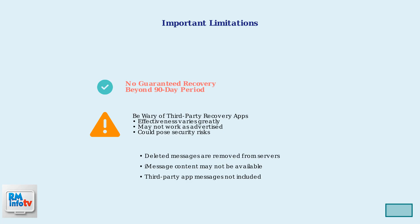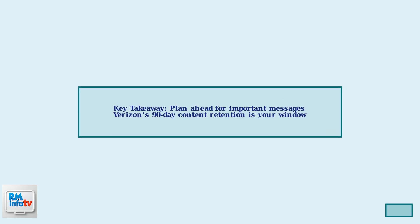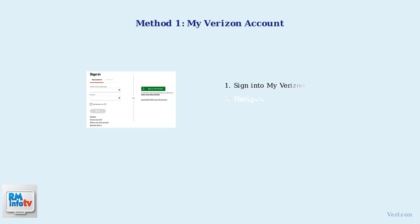Messages from apps like iMessage or WhatsApp may not be available through your Verizon account at all. The key takeaway is to plan ahead for any important messages you might need later. Verizon's 90-day content retention period is your primary window for accessing actual message content, so save important conversations before this deadline passes.